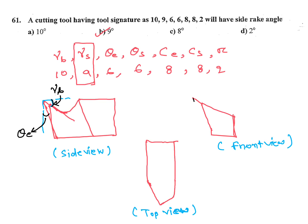Here we will get front view. Here this angle is side rake, this is your side clearance angle. Here in top view we will get CS and CE. CS is side cutting edge angle, CE is end cutting edge angle.